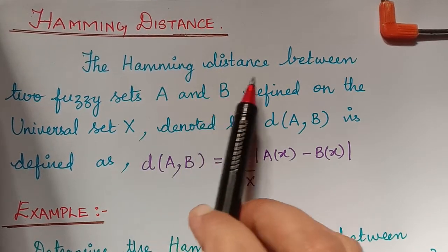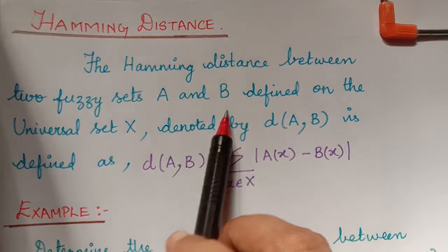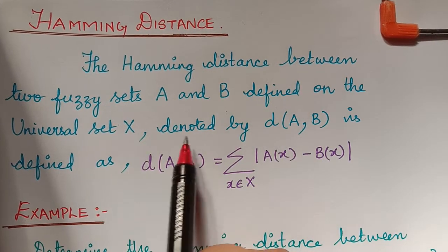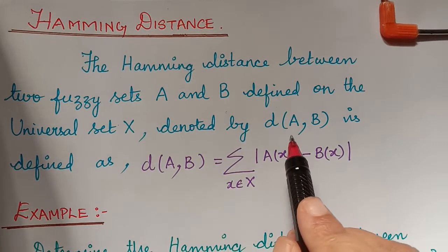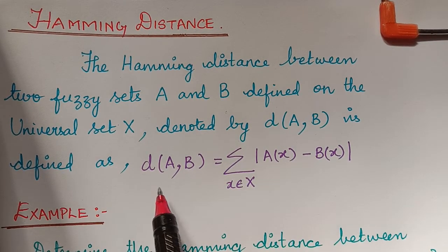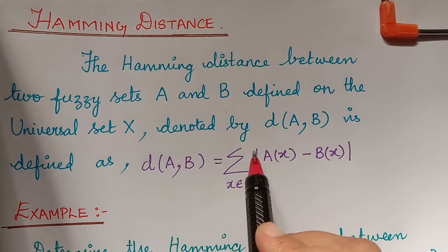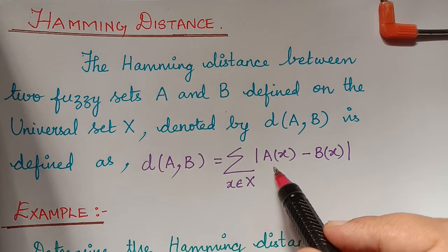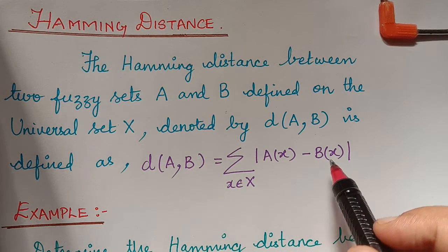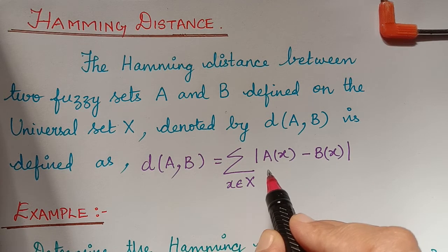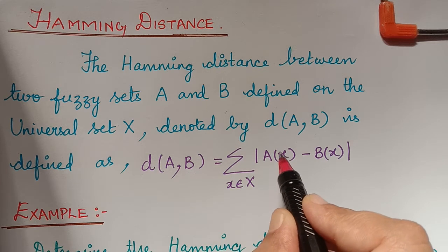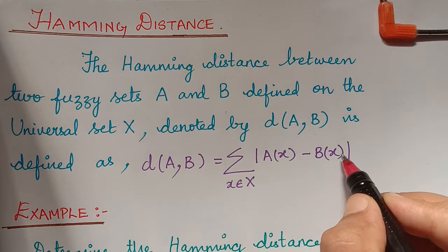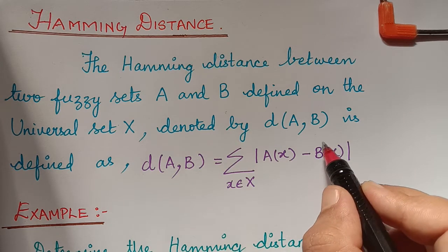The Hamming distance between two fuzzy sets A and B defined on the universal set capital X, denoted by D of A comma B, is defined as D(A, B) equal to summation over X, an element of capital X, of the modulus of A(x) minus B(x), where A(x) represents the membership grade of element x in fuzzy set A, and B(x) represents the membership grade of element x in fuzzy set B.